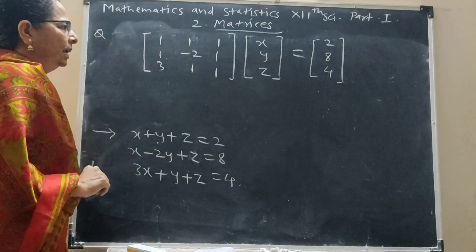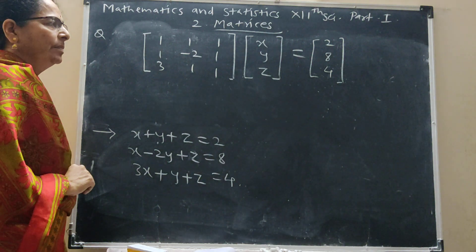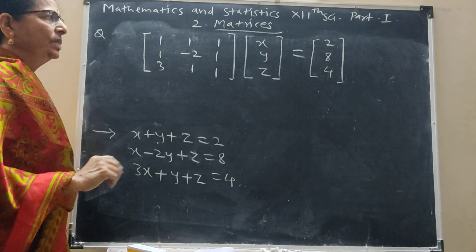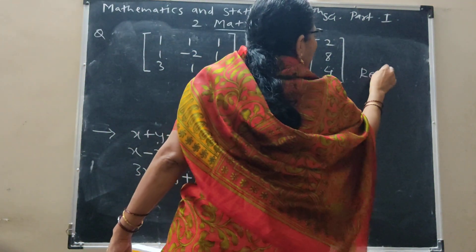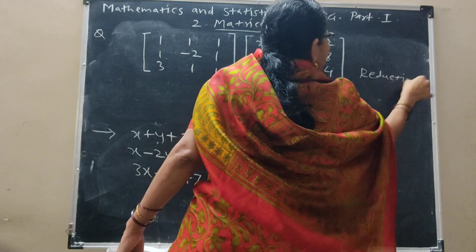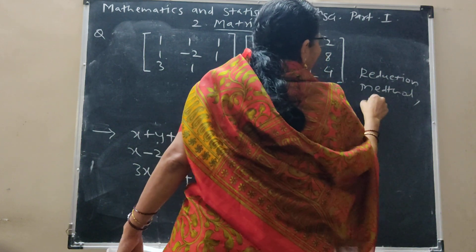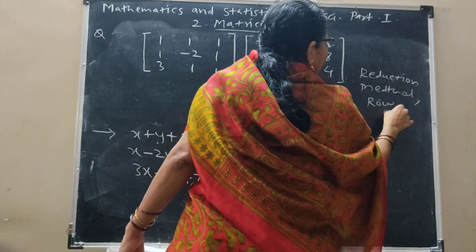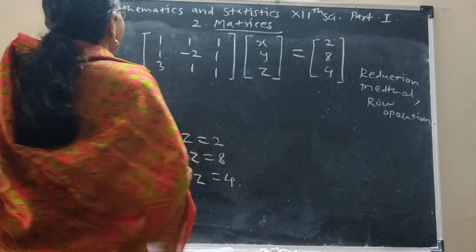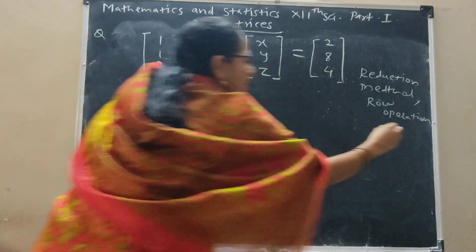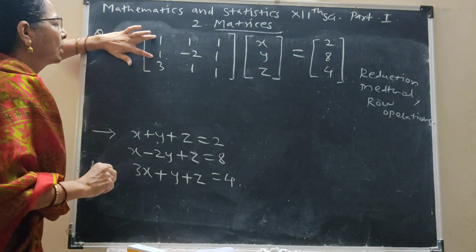Now we find the numbers by using matrices — that means we have to use the row reduction method. In this method, we use row operations.